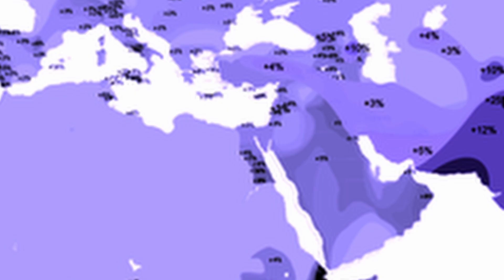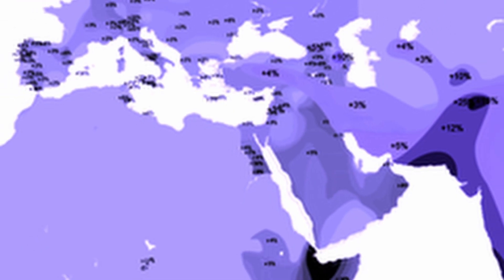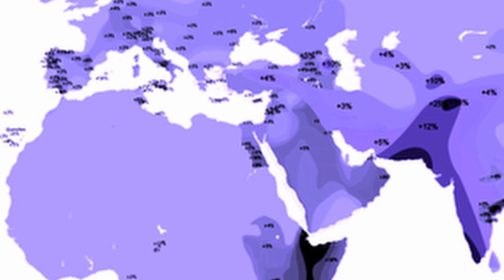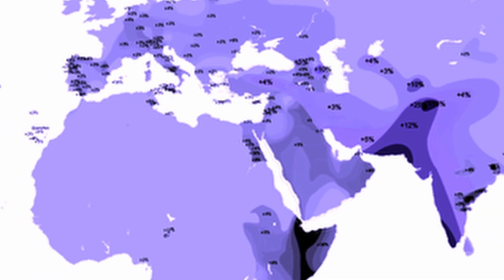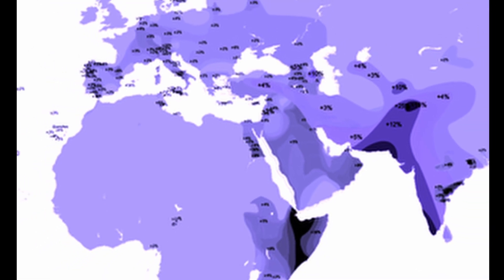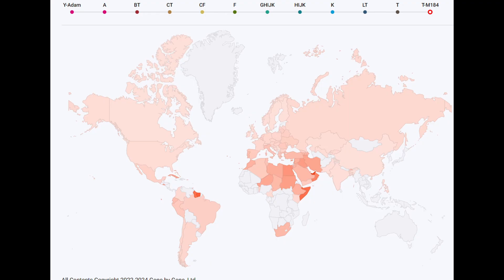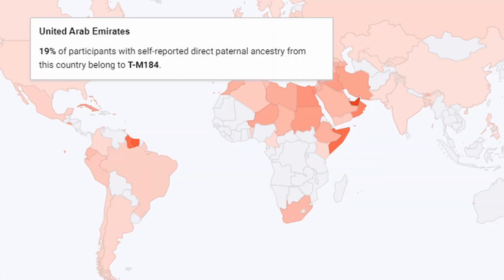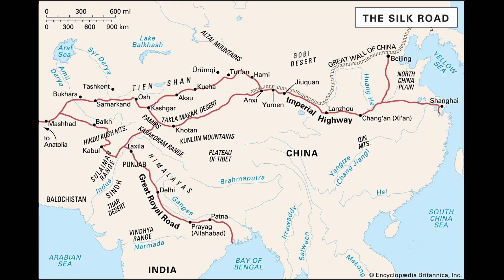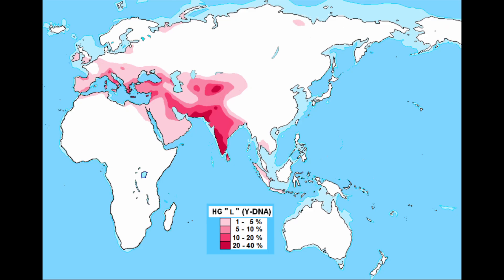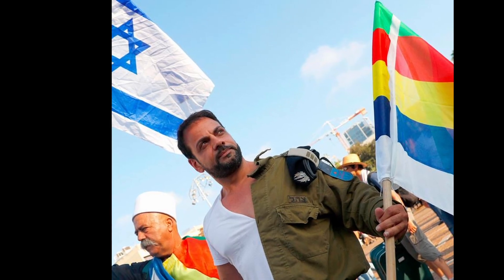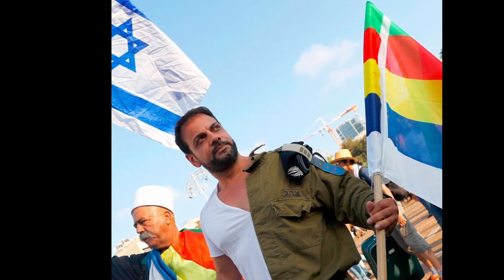LT appears to be indigenous to the Fertile Crescent, and from where T and L spread farming, herding, and metallurgy. T went west beyond Turkey, but also reached the Silk Road. It's believed that L went east beyond Sri Lanka, but what about the Druze with LM20?